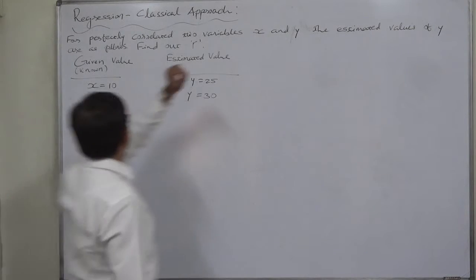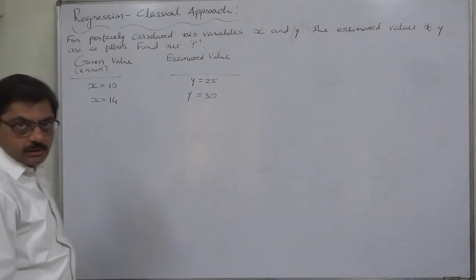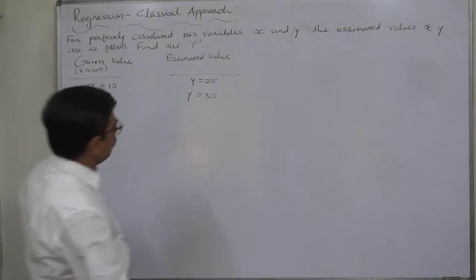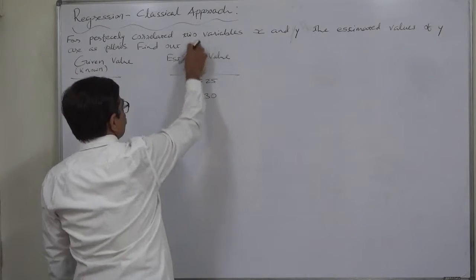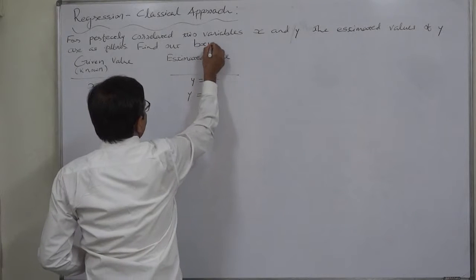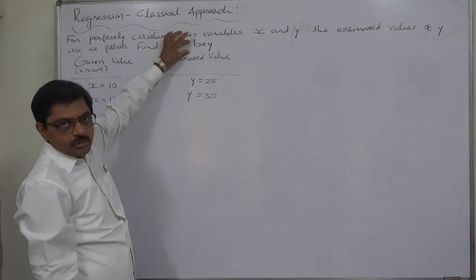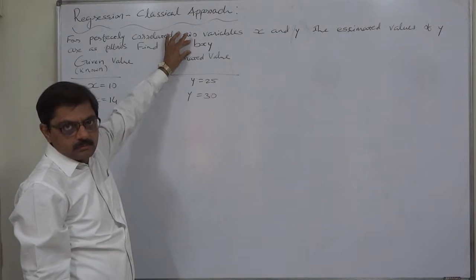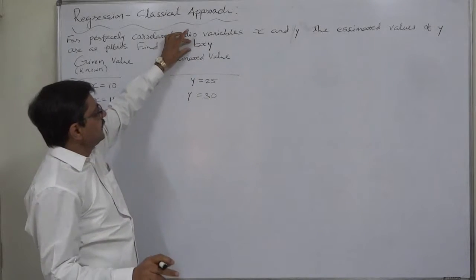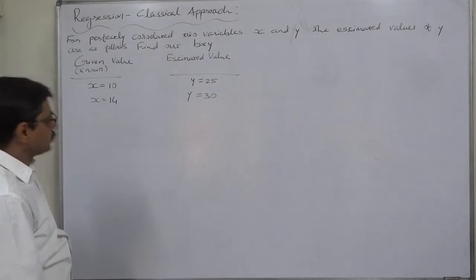The estimated values of y are as follows. Find out the coefficient of correlation. It should not be the question to find out the coefficient of correlation. The question should be find out the value of Bxy. In the original question it was coefficient of correlation but it is not correct. That's why I changed. It was not my mistake. It was the mistake in the question which was given to me by a student.